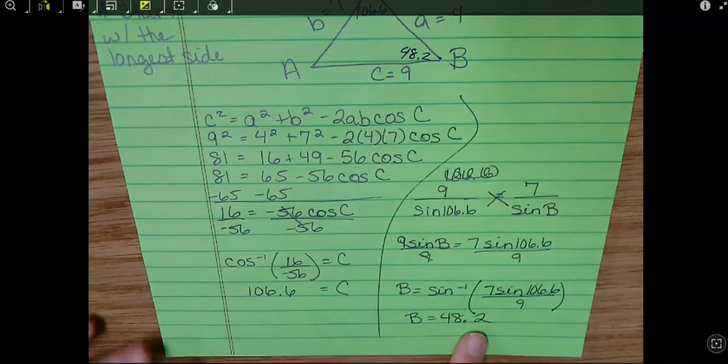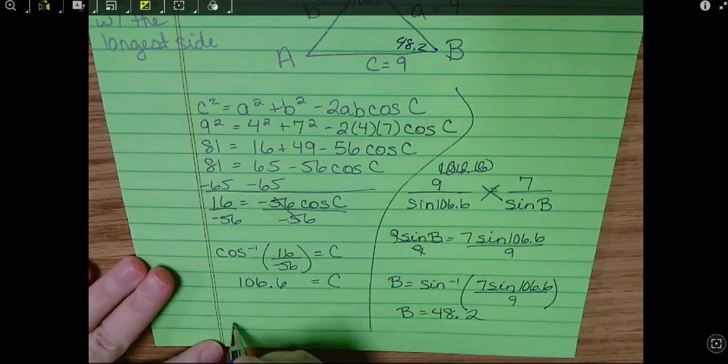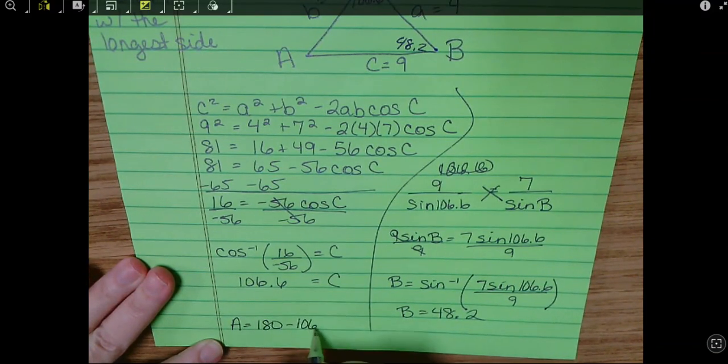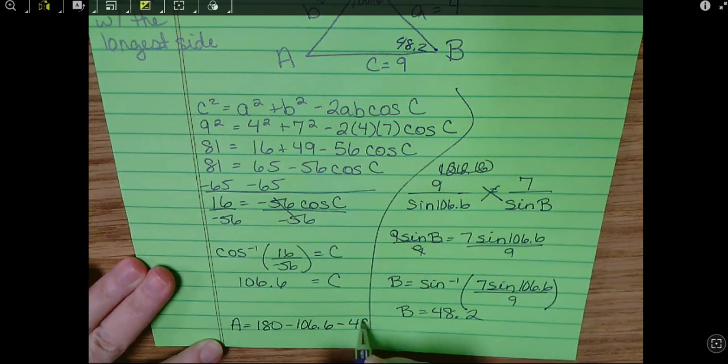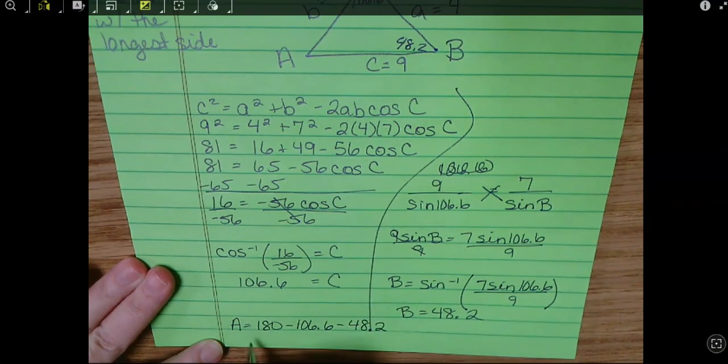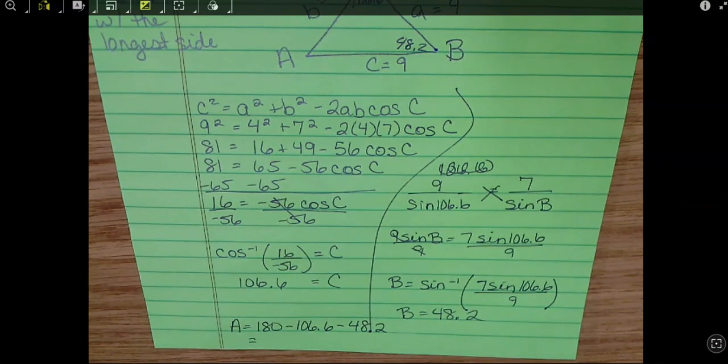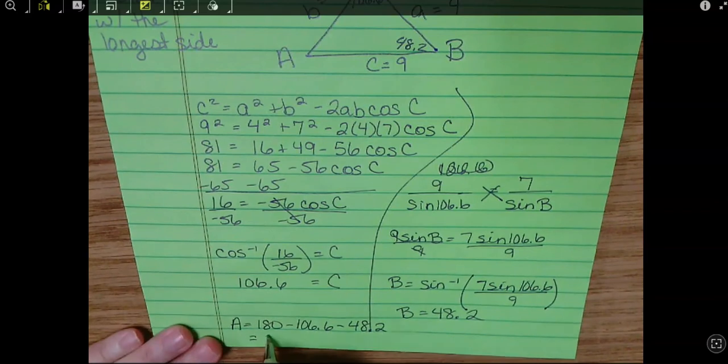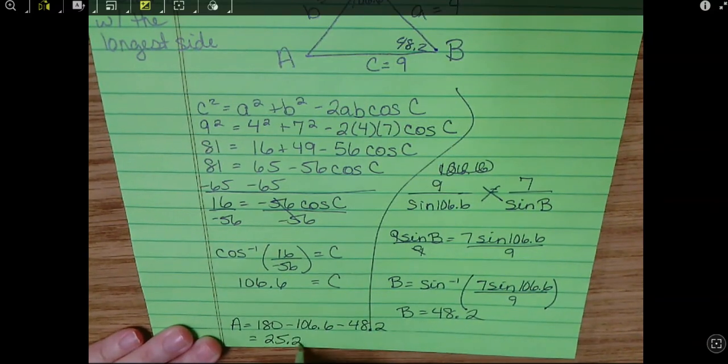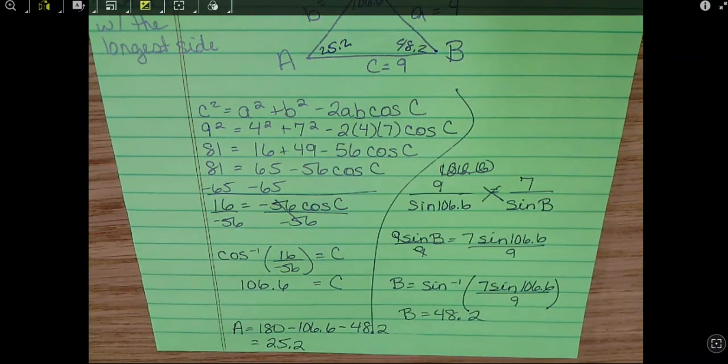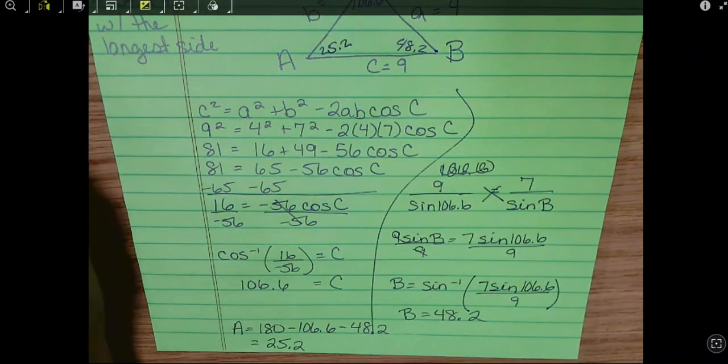I know two angles, so we can find big A is 180 minus 106.6 minus 48.2. Okay, so 180 minus 106.6 minus 48.2, and I get 25.2. Okay, I hope this helps. Good luck.